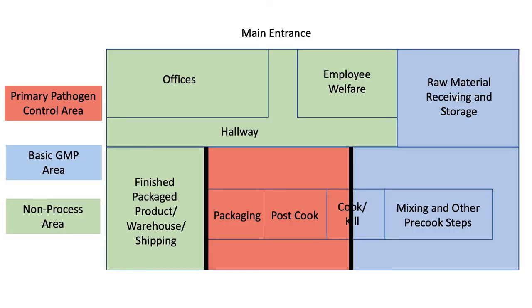You should have already mapped out your facility and separated it into different hygiene areas. In this example, the green non-processing areas include offices, a hallway, the restrooms and break room, and the finished product warehouse and shipping area. The blue indicates the basic GMP area that includes raw material receiving and storage, mixing, and pre-cooked steps. The raw materials then enter the cook step.